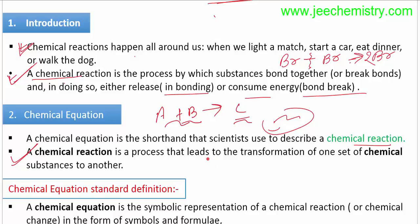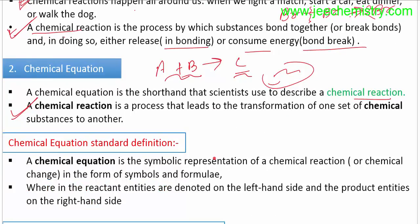A chemical equation is a symbolic representation of a chemical reaction in the form of symbols and formulas. The reactant entities are denoted on the left-hand side and the product entities on the right-hand side. So in a chemical equation, the left side is the reactant entity and the right side is the product entity.